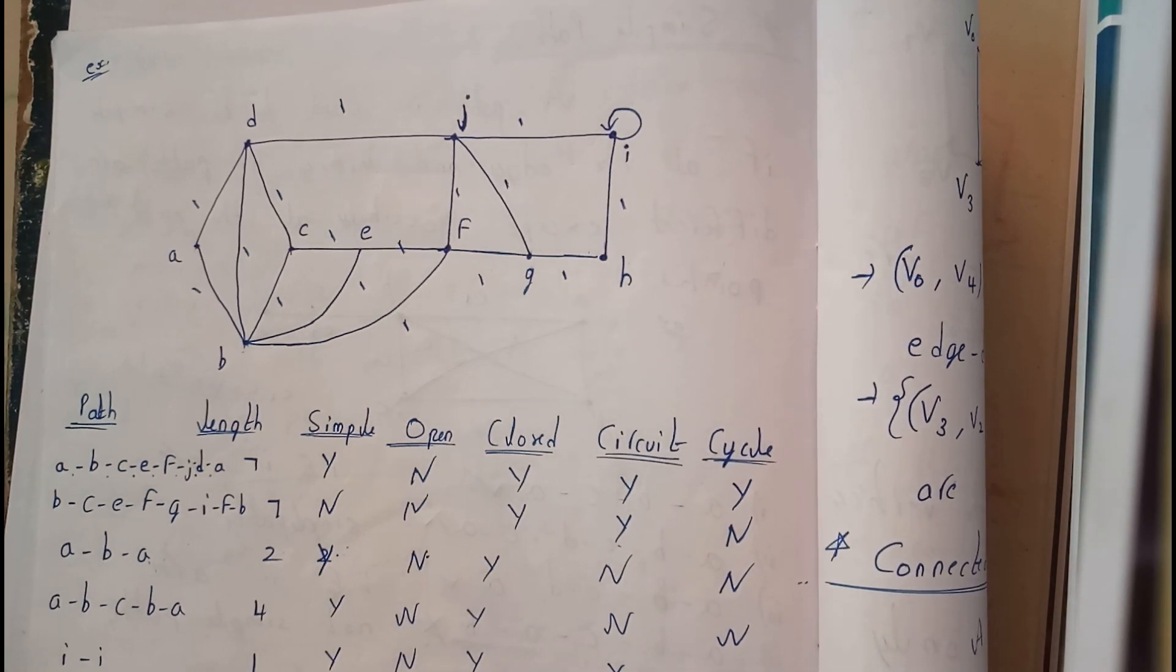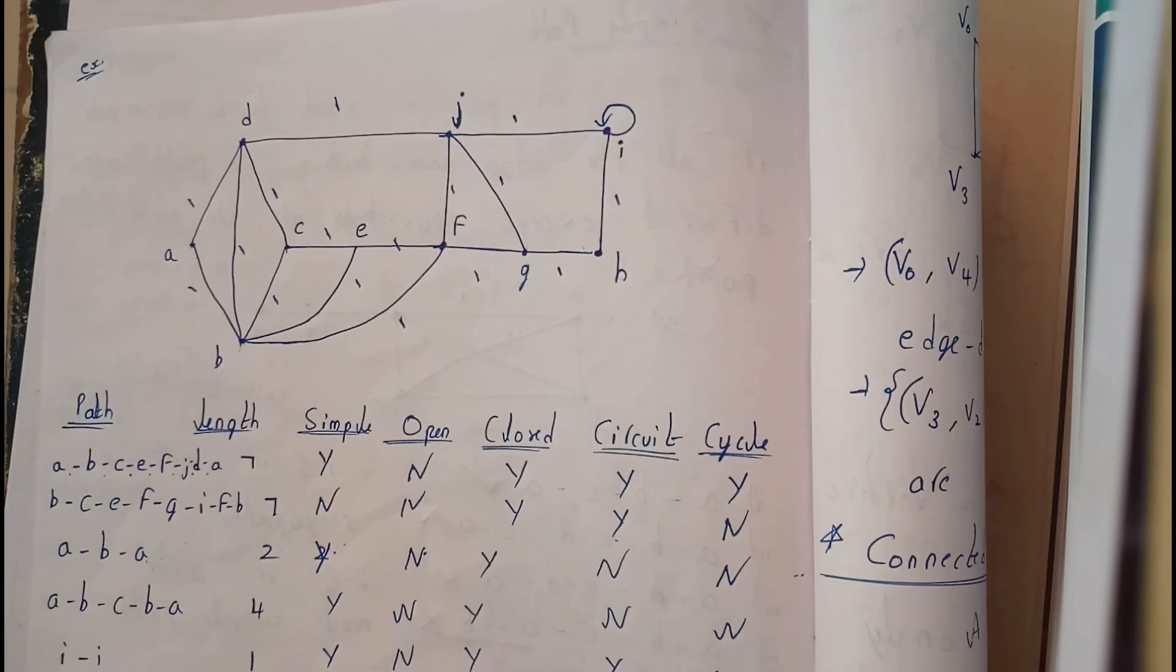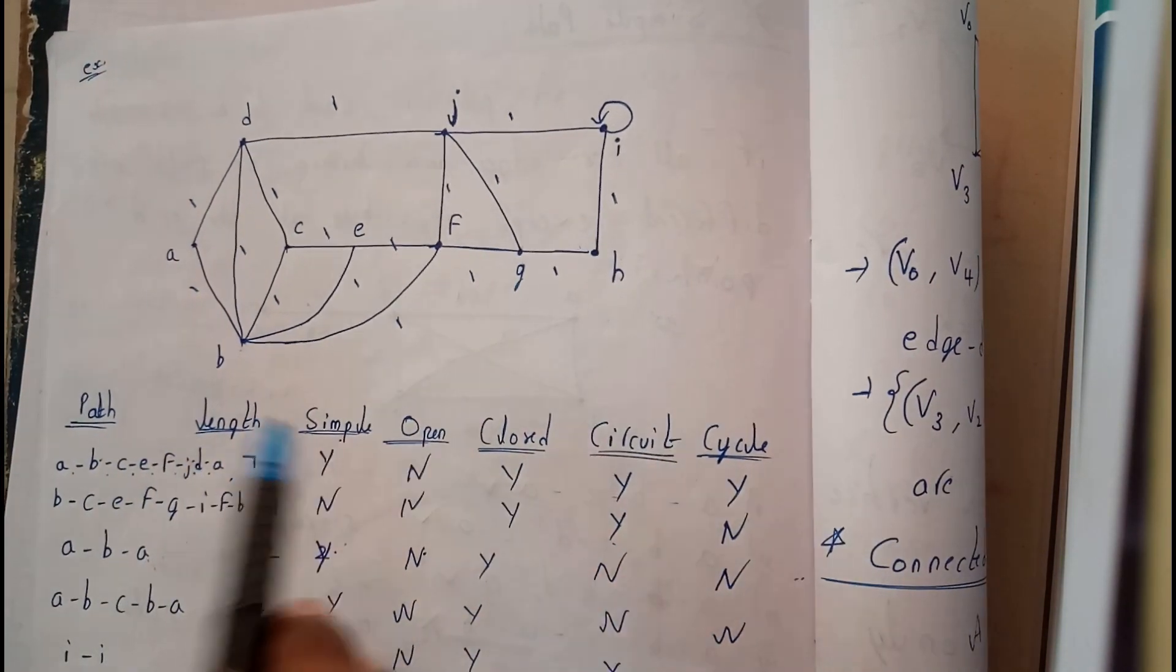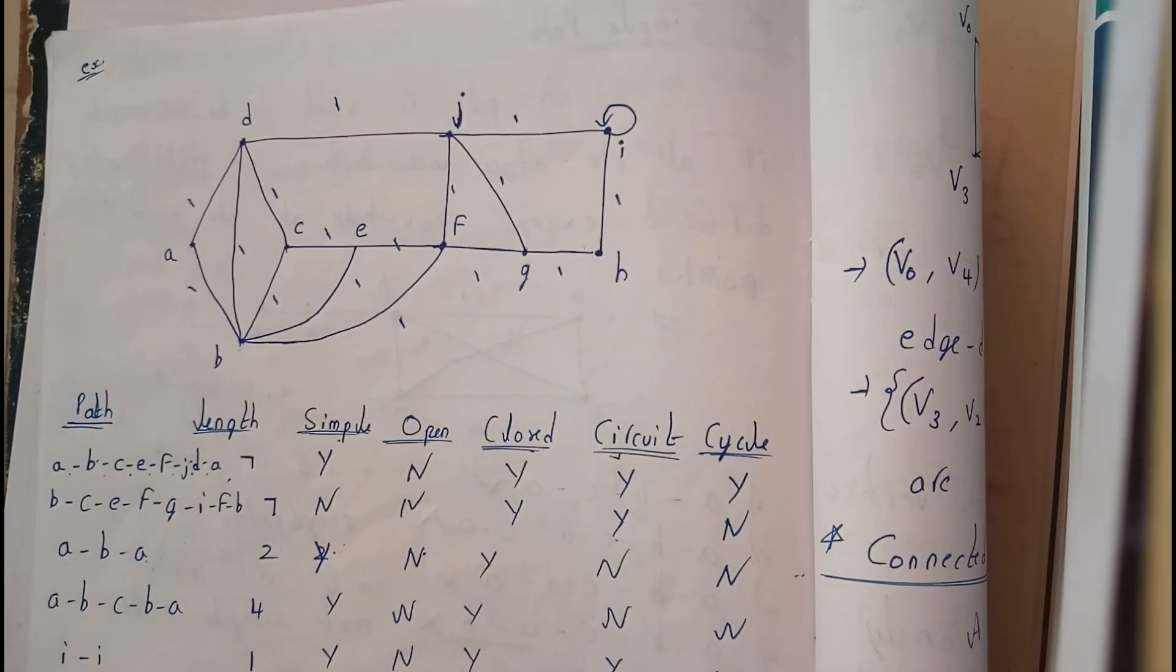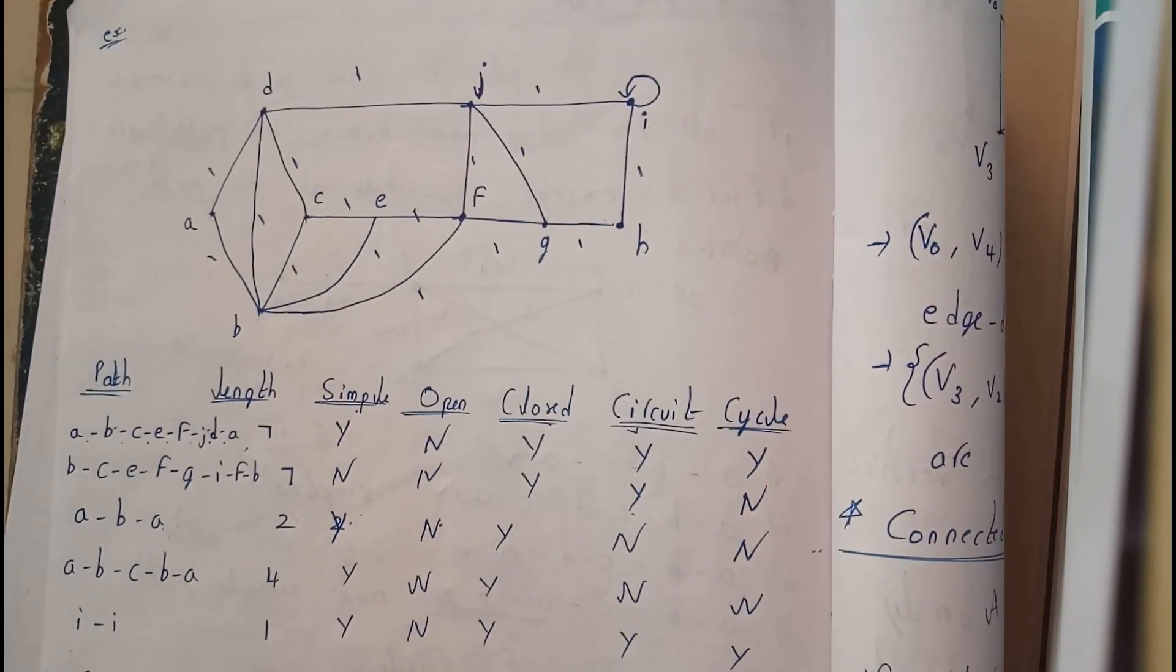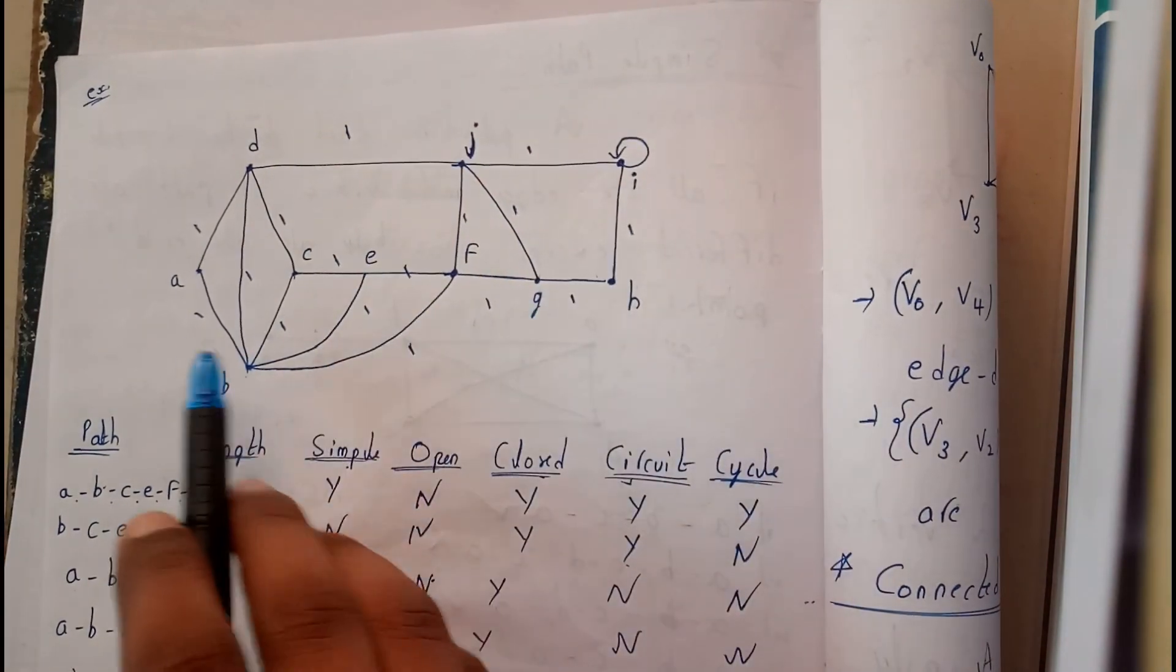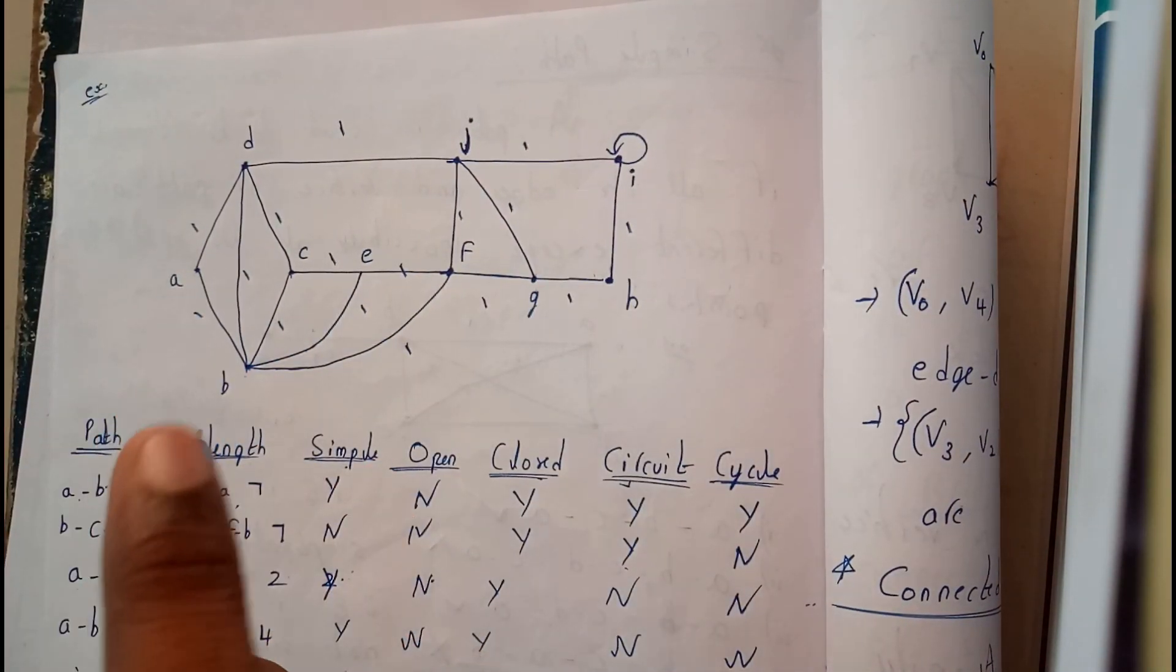Hello guys, in this tutorial let's take an example on all the topics we have covered. We have covered path, path length, what is a simple graph, what is an open graph, closed graph, circuit and a cycle. So let's review all the topics with an example. Here is a graph with every edge labeled with a weightage of 1.